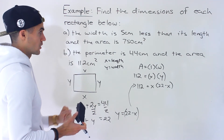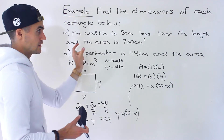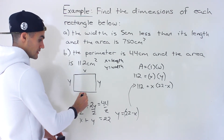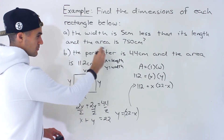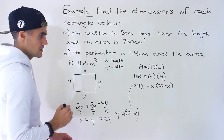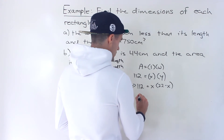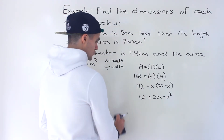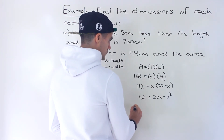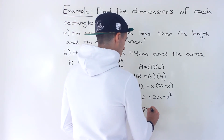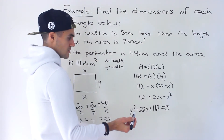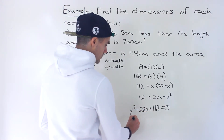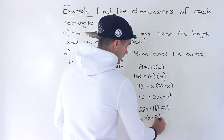We had to do a little extra work in part B because we weren't explicitly told how width and length relate directly — we were told indirectly through the perimeter. Expanding gives 112 equals 22x minus x². Bringing everything to the left to make x² positive: x² minus 22x plus 112 equals 0. You could use the quadratic formula, but this factors smoothly into (x minus 14)(x minus 8) equals 0.